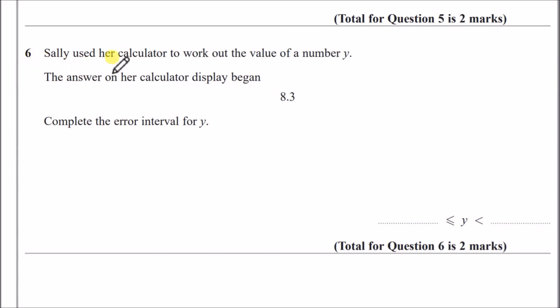Number six: Sally used her calculator to work out the value of a number y. The answer on her calculator display began 8.3. Complete the error interval for y. You have to ask yourself what it could have been. We're not looking at bounds—we're thinking what the number could have been. It could have been 8.3125 or 8.3967. The smallest possible value could have been 8.300001, so the lowest value must have been 8.3.